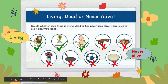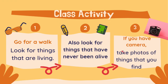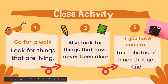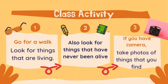And for this flower vase, it is considered dead. Now let's go for a walk. Look for things that are living, and also look for things that have never been alive. If you have a camera, take photos of things that you find, or make a list of things that are alive or have never been alive. Then try to make comparisons between them, and tell others about why something is alive or has never been alive.